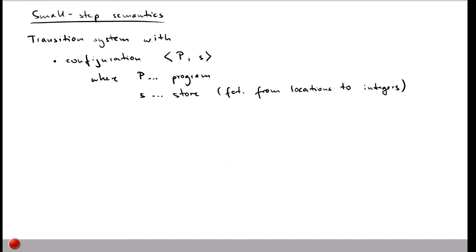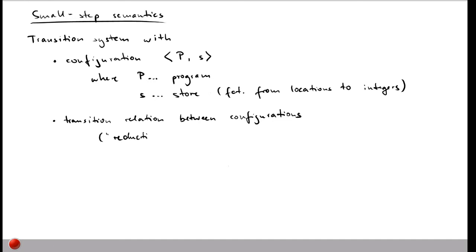P is the program and S is the store, which is a function from locations to integers, similar to the memory. The configuration is easy to define. The slightly harder part is to actually define the transition rules — that is, the transition relation — that tells us how to get from one configuration to another. These relations are sometimes also called reduction relations.